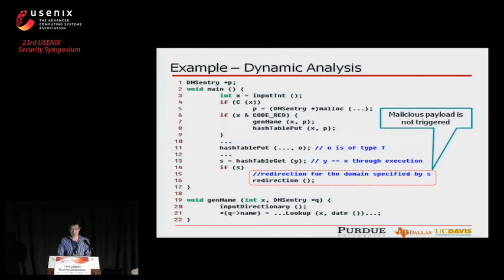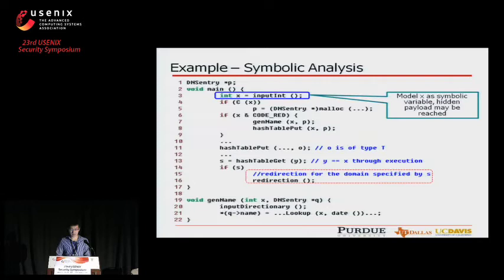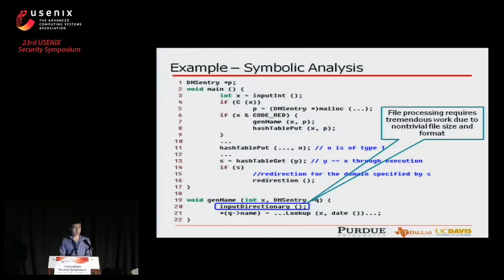For symbolic analysis, we can model X as a symbolic variable, and the hidden malicious payload might be reached at line 16. However, the function input_dictionary at line 20 reads a large file which is not available and has non-trivial size and format. So modeling the file as symbolic is definitely not scalable.